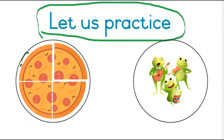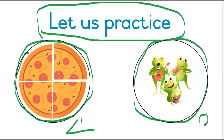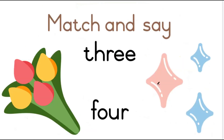How many pieces of pizza do you see in the left circle? Good job! There are 4 pieces. How many singing and dancing frogs can you see in the right circle? Perfect! 3 of them.